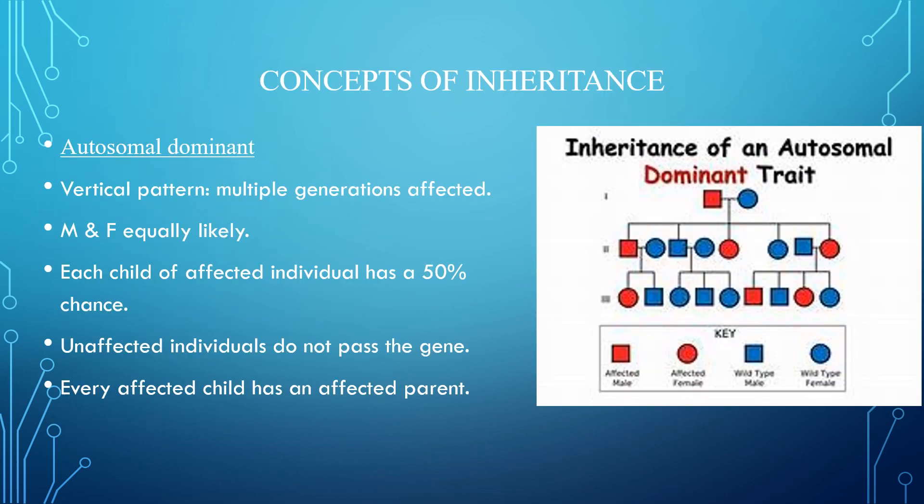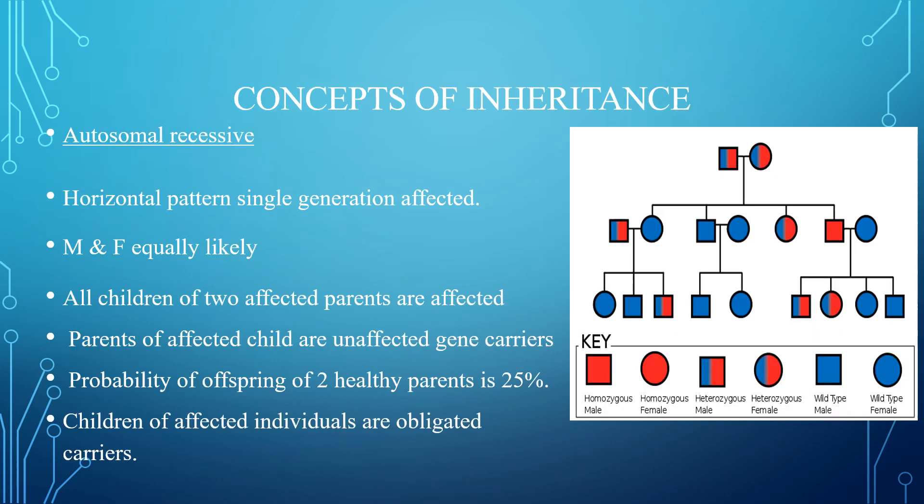Autosomal dominant inheritance shows a vertical pattern with multiple generations affected. Males and females are equally likely to be affected. Each child of an affected individual has a 50% chance. Unaffected individuals do not pass the gene, and every affected child has an affected parent. Autosomal recessive shows a horizontal pattern with a single generation affected. Males and females are equally likely to be affected. All children of two affected parents are affected. Parents of an affected child are unaffected gene carriers. The probability of an offspring of two healthy parents having the disease is 25%, and children of an affected individual are obligated carriers.